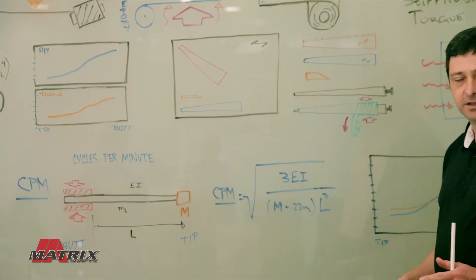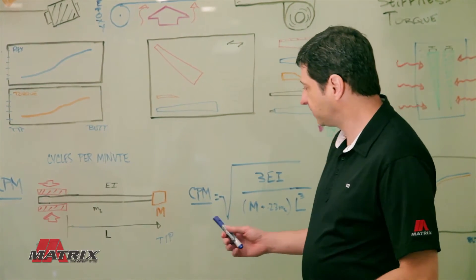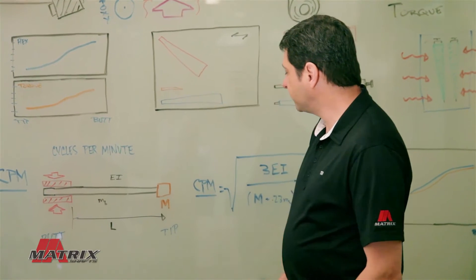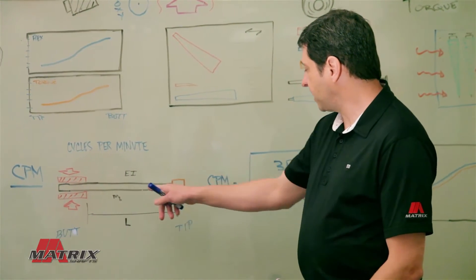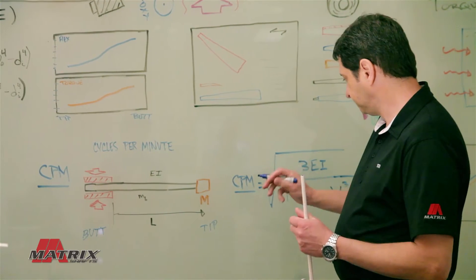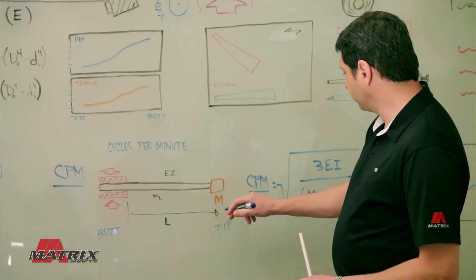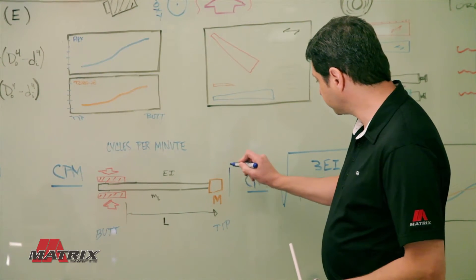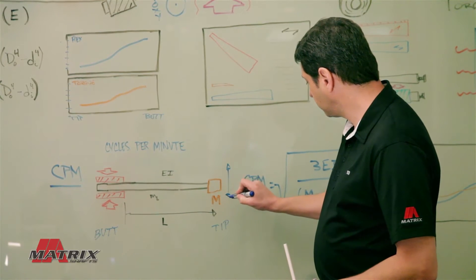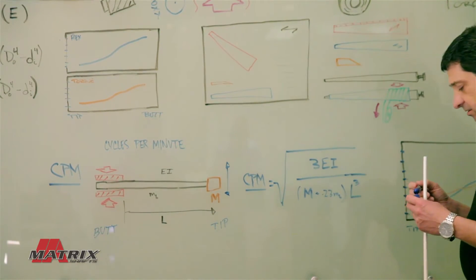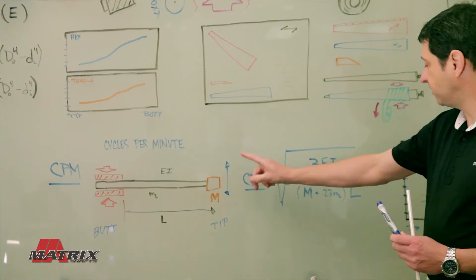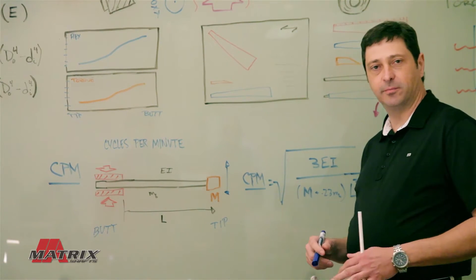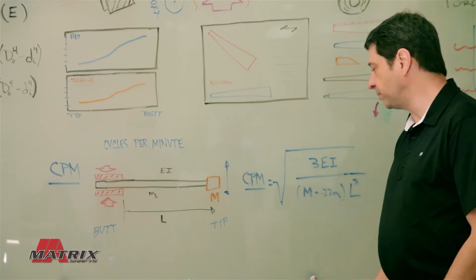So why is it called cycles per minute or frequency? Well, when you have this system of the shaft with a weight on the end and you introduce a force, the shaft will start to vibrate or bounce up and down. And the number of vibrations you see in a minute is your frequency or your cycles per minute.